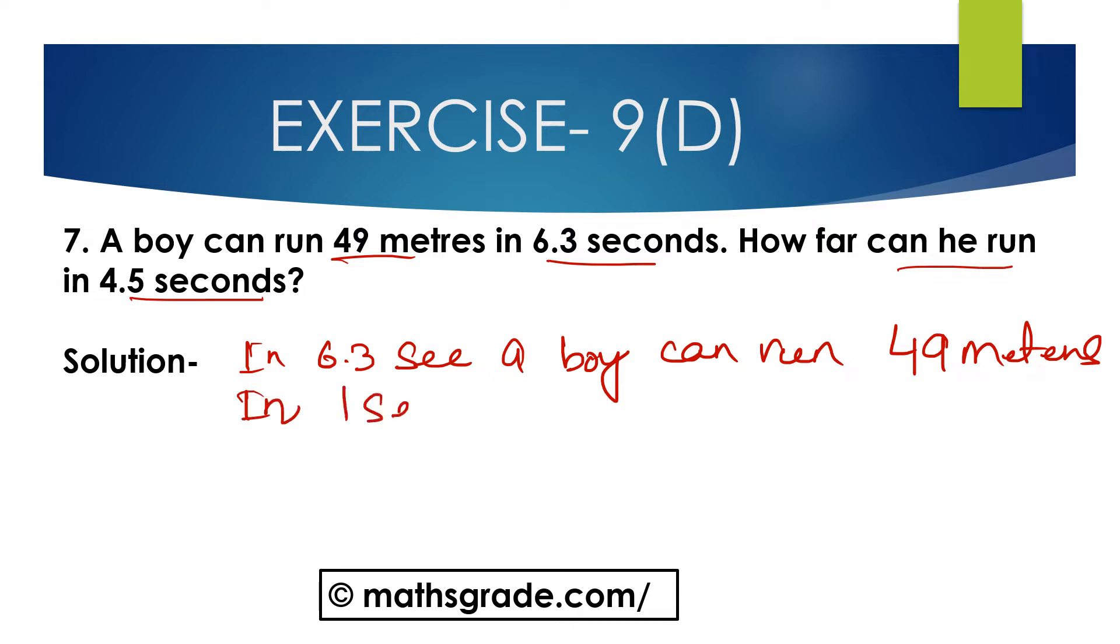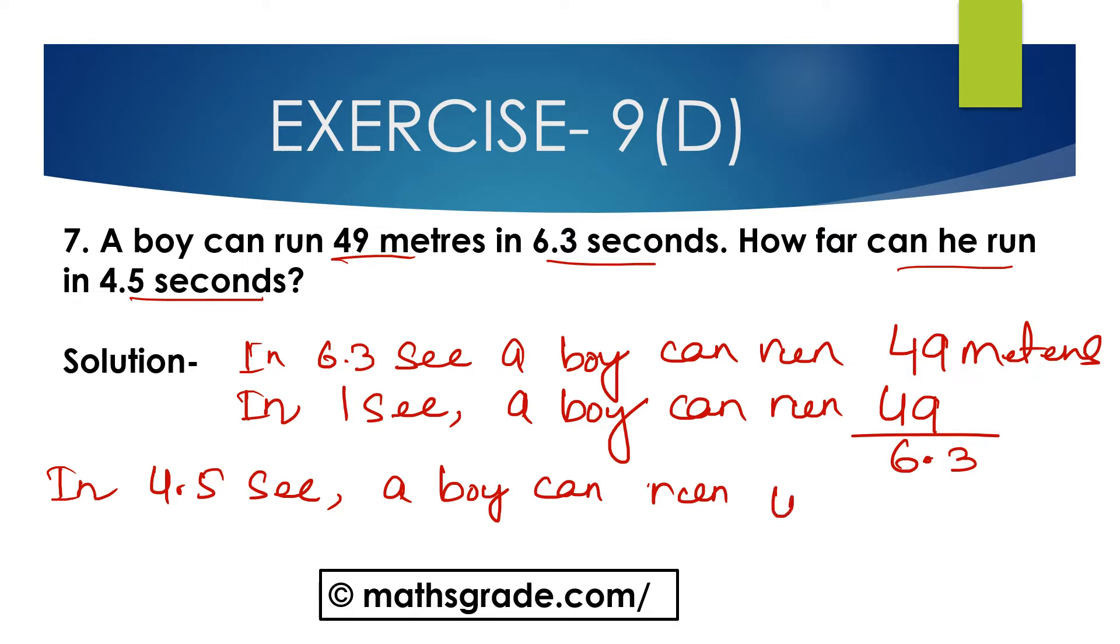In 1 second, a boy can run 49 divided by 6.3 meters. In 4.5 seconds, a boy can run 49 divided by 6.3 multiplied with 4.5.